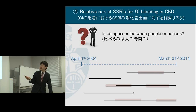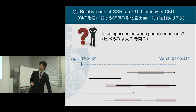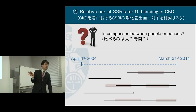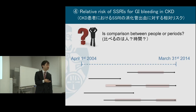I had difficulty deciding what the comparison should be — between people or between periods. If I chose people, I would compare those three patients prescribed antidepressants at any time, even for a short period, versus the rest. If the outcome were cancer incidence, I should choose that option, because once a patient is exposed to a drug, they may be at risk later. But in the case of GI bleeding, the risk is generally increased only at the time of drug prescription.